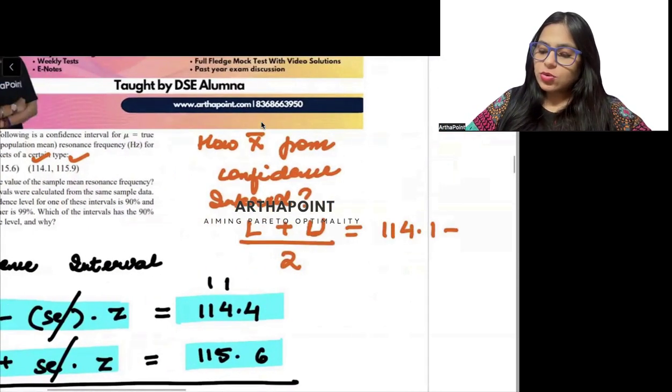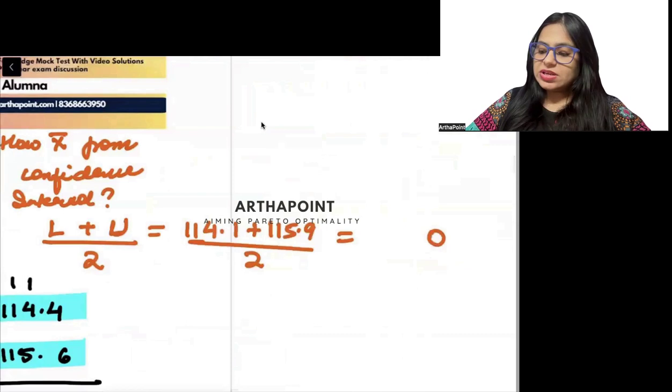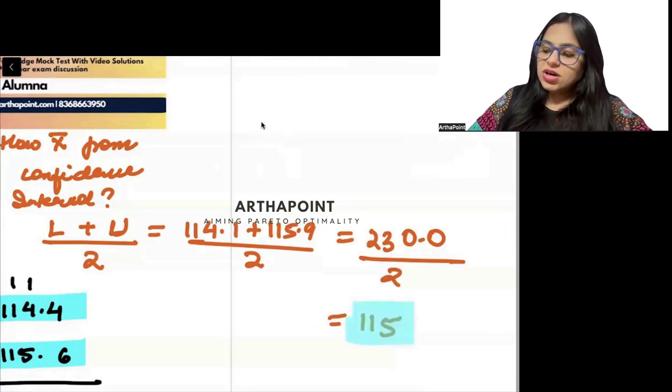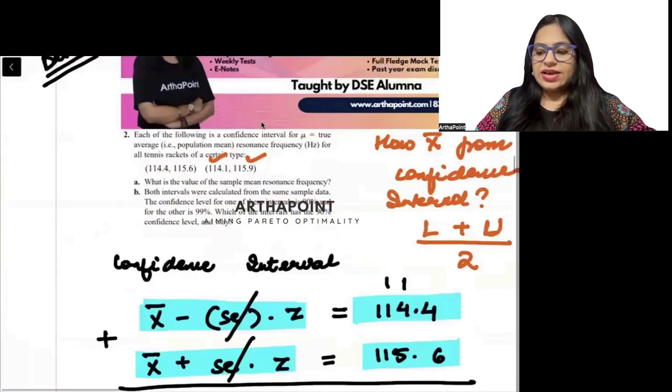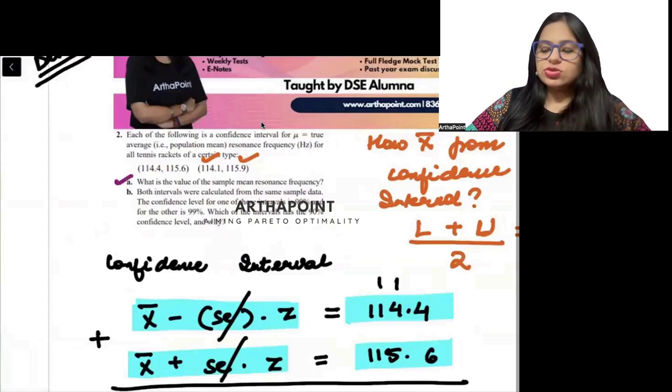And you can just add the lower plus upper limit and divide it by 2. So in this case, this is going to be 114.1 plus 115.9 divided by 2. So this is going to be from here also 230 divided by 2. So 115. So from here also, you will get the answer at 115. Right. So this is the first part to this question.